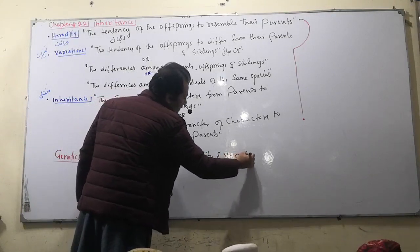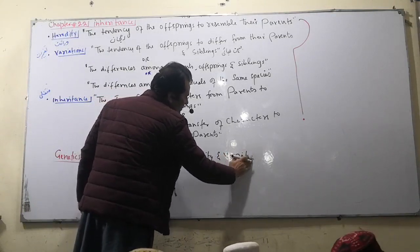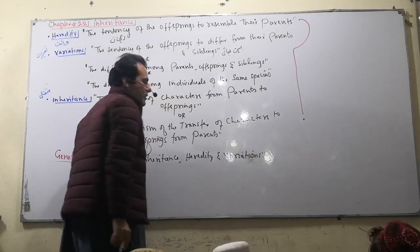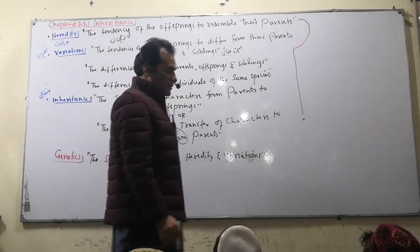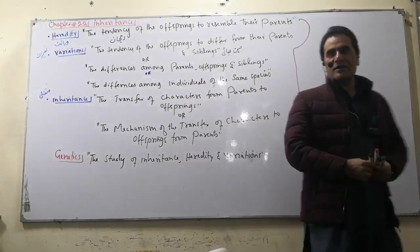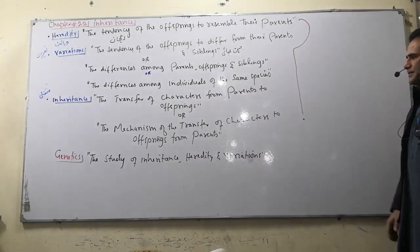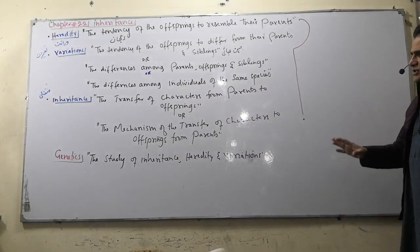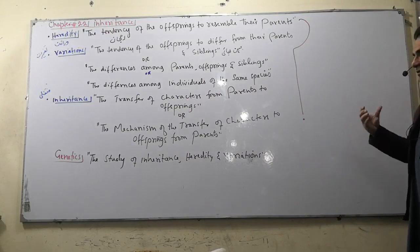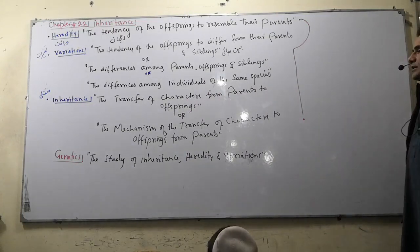In genetics we study the phenomenon of why children resemble their parents, and also why children have a variety of different characters. The word genetics comes from the Greek word meaning the process of origin or creation.